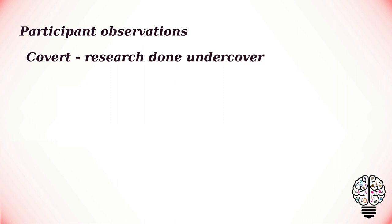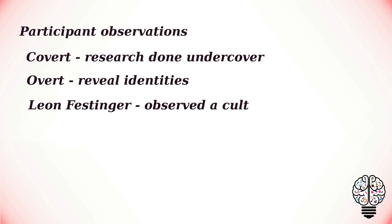Participant observations can be either covert or overt. Covert is where the study is carried out undercover. Overt is where the researcher reveals their true identity and purpose to the group and asks permission to observe. If researching animals, we would not only be studying them in their natural habitat but also living alongside them. This approach was used by Leon Festinger in a famous study of a religious cult who believed the end of the world was about to occur. He joined the cult and studied how they reacted when the prophecy did not come true.